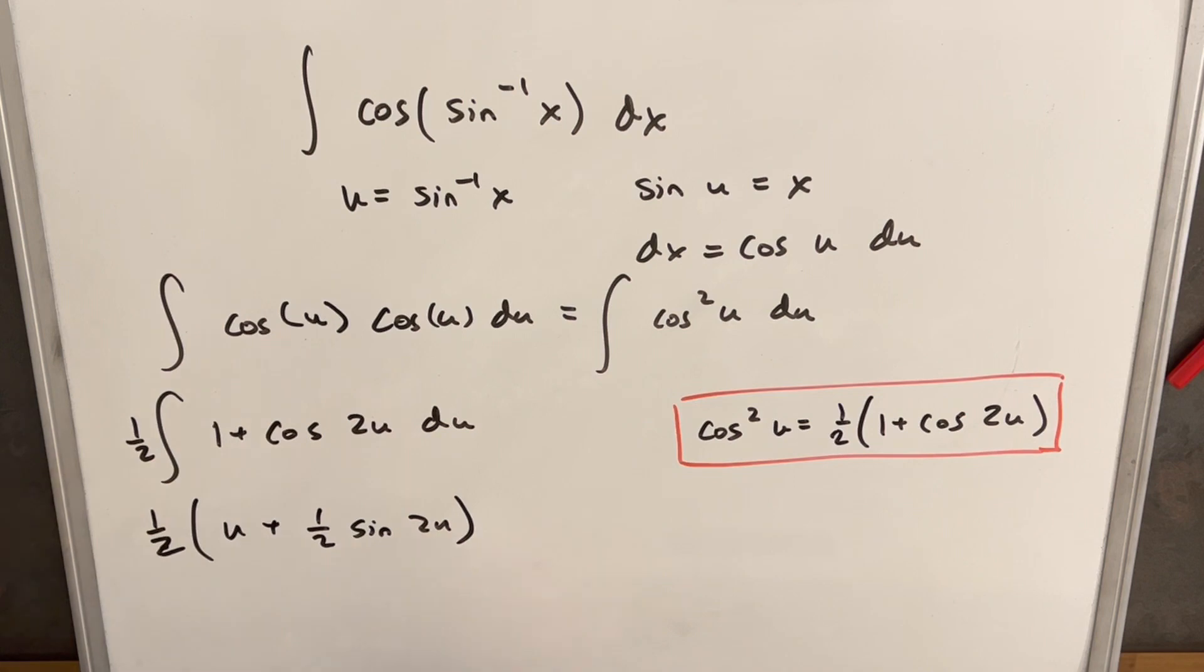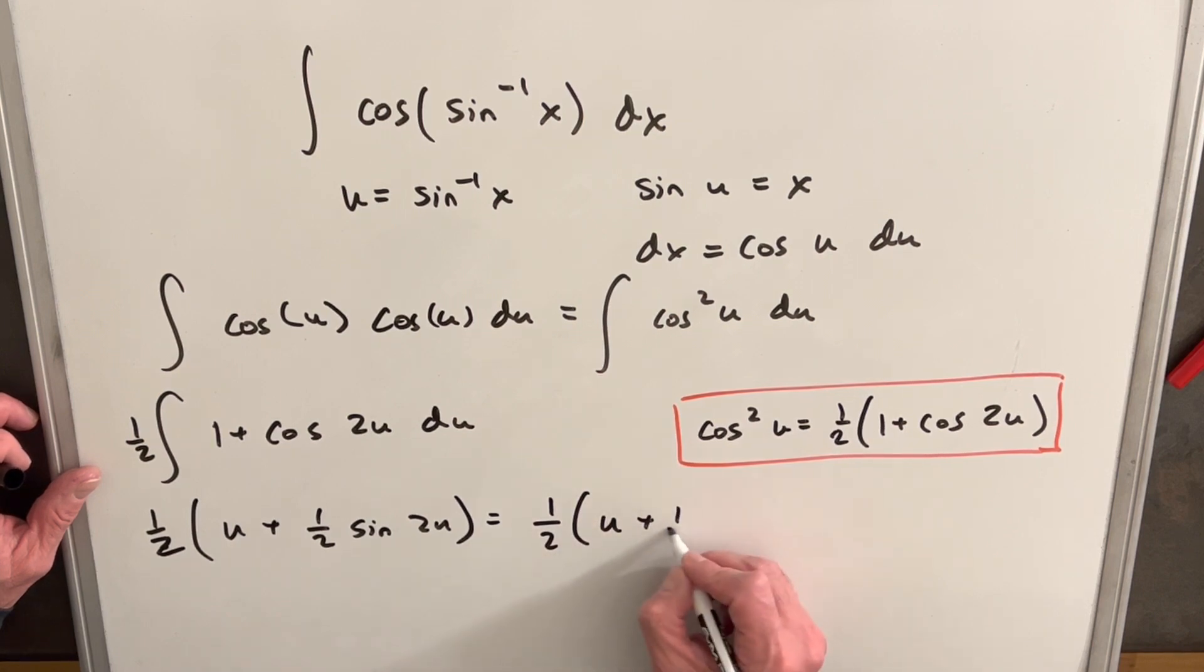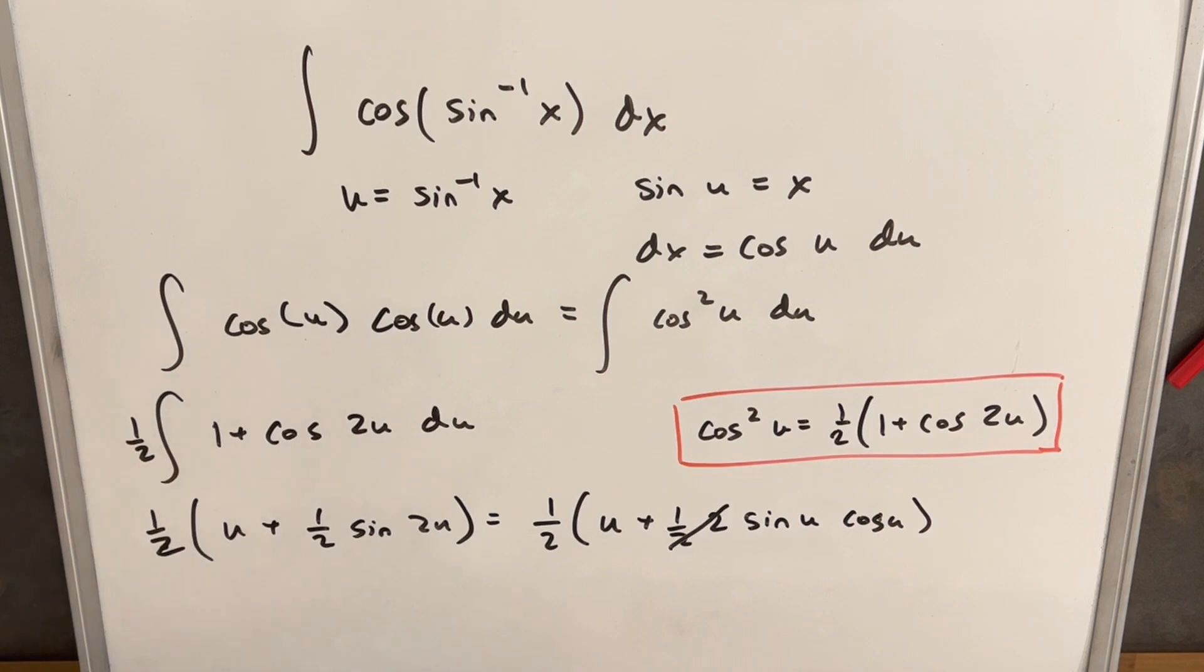Before we back substitute, I think we're going to use the double angle formula here. So we're going to have 1 half u plus 1 half, and then sine 2u we can write as 2 sine u cosine u. But the half and the 2 are going to cancel there.